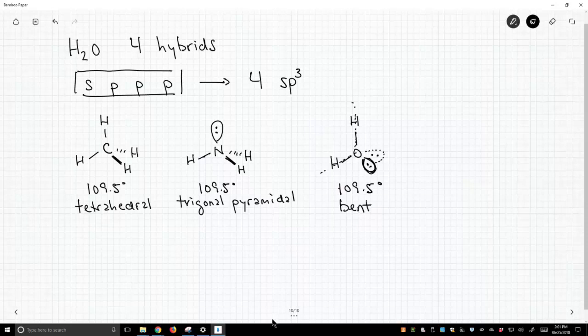So just as we saw with sp2, which had a bent geometry, this also has a bent geometry, although a different bond angle, 109.5. So what is the experimental bond angle in water? It is, drum roll please, 104.5 degrees.